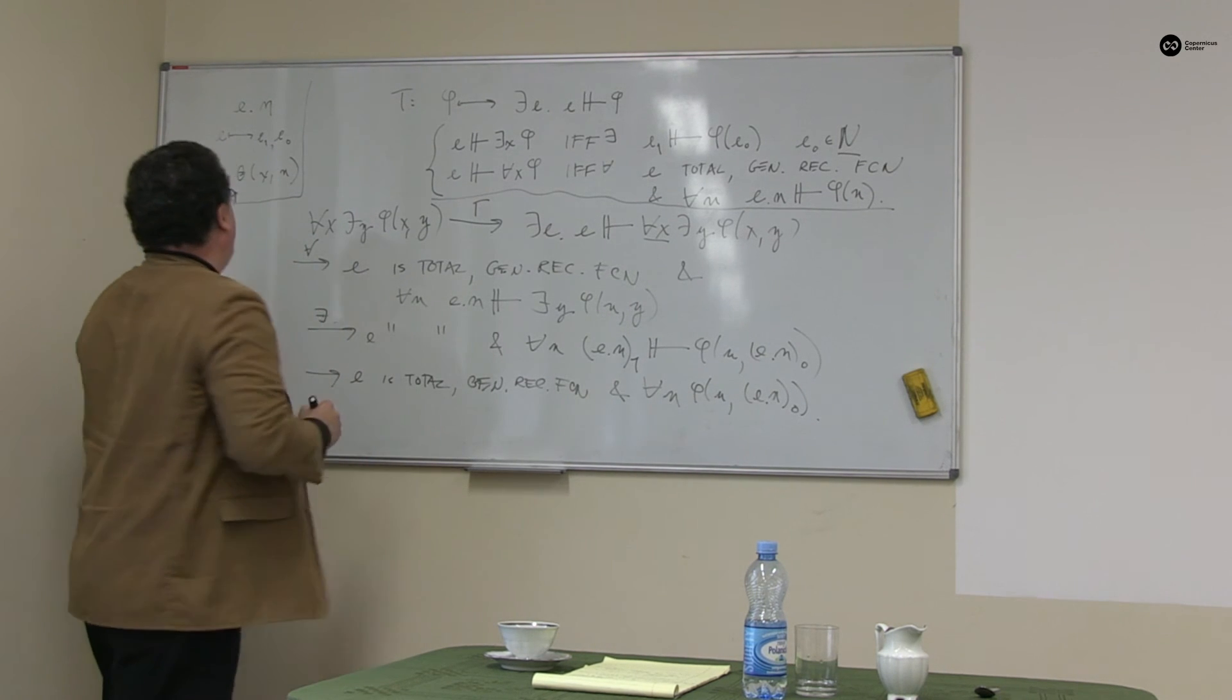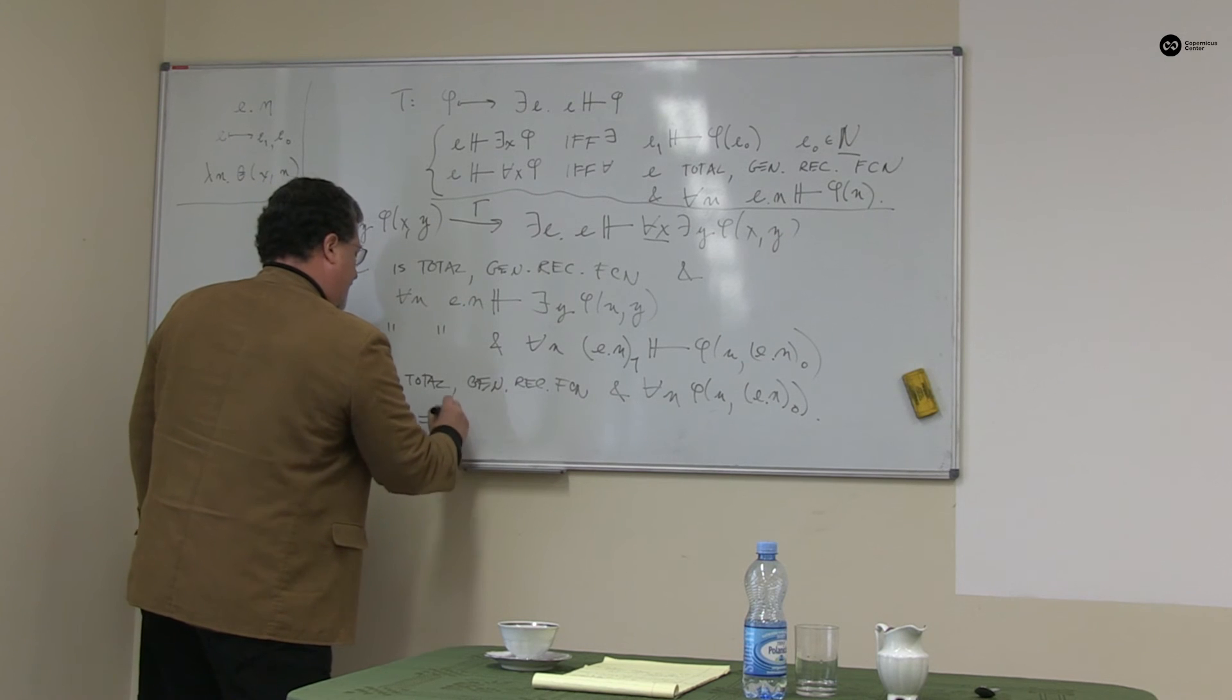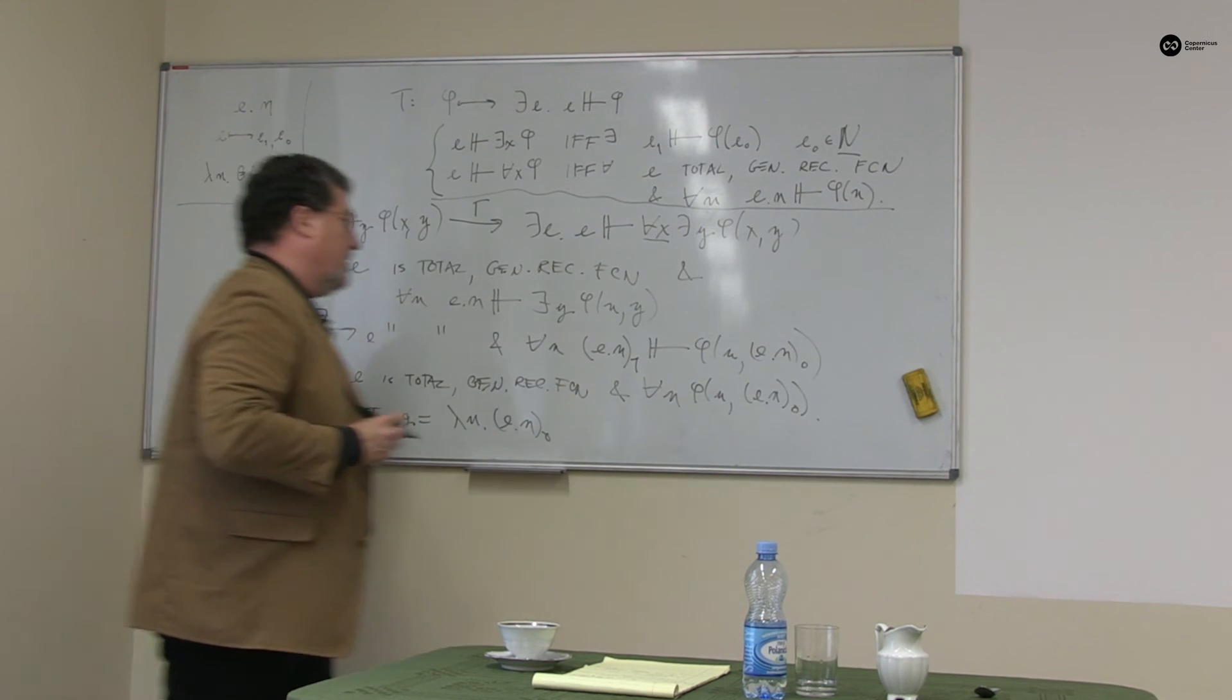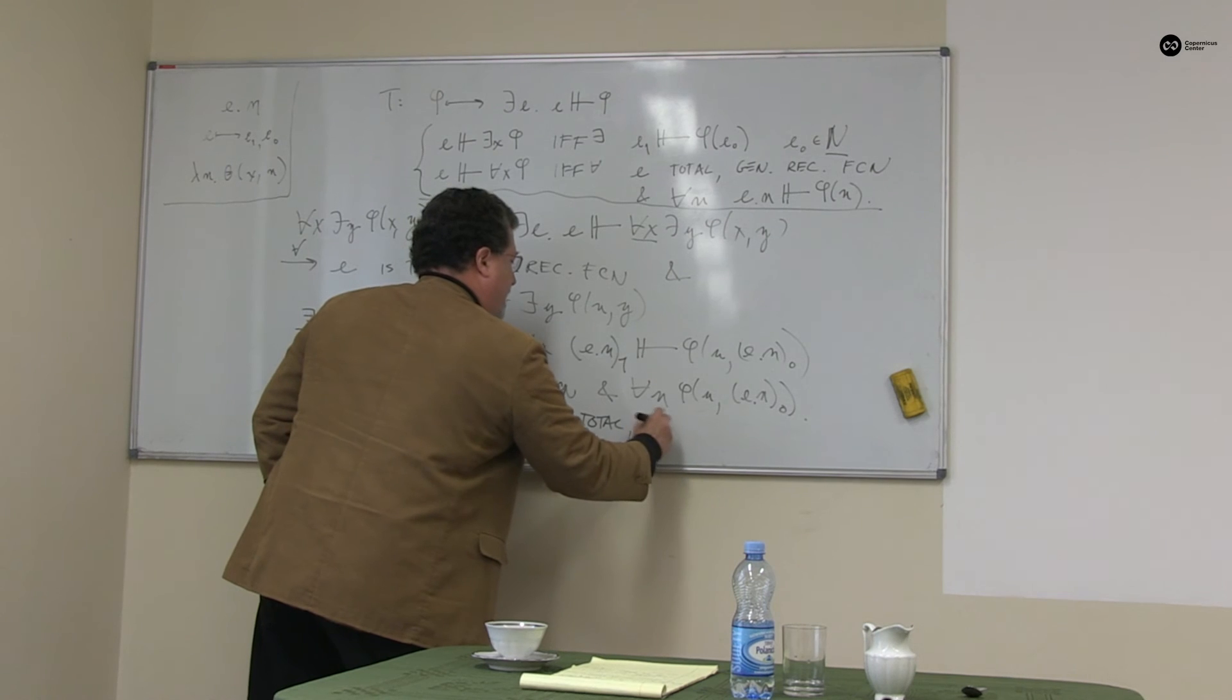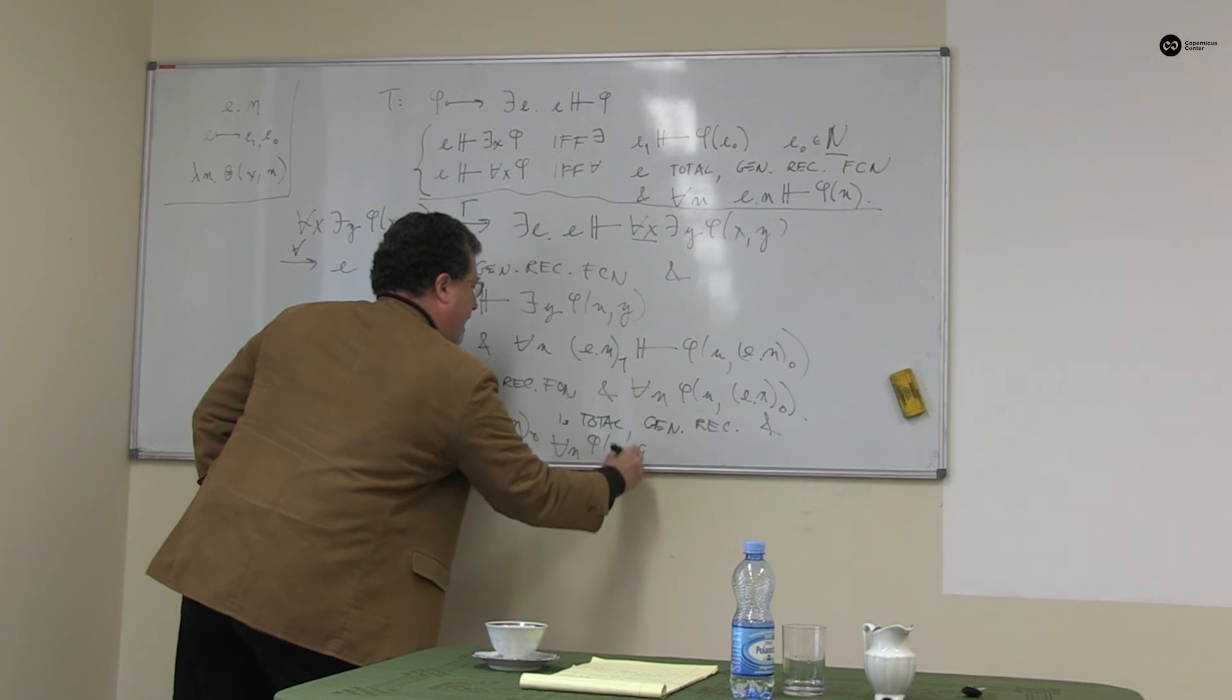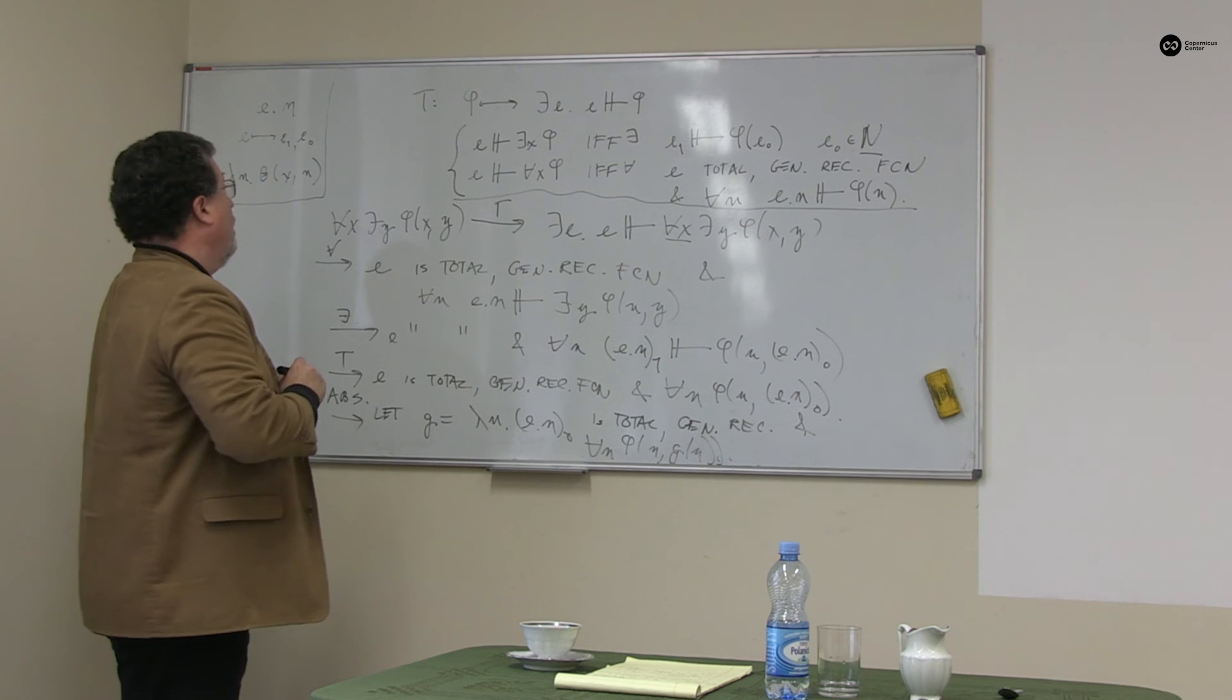And now I'm going to do an abstraction. I'm going to let g encode the procedure that gives me lambda n en0. I assumed that into functional context I can perform extractions and recursivity is being preserved. Zero is total. We assume that en is total. So this thing is total. It's general recursive. And we now have for all n phi n g of n. So putting it all together, here I've just used abstraction. Here I've used the t-scheme.